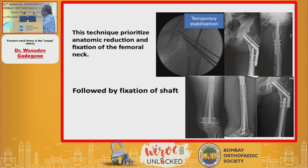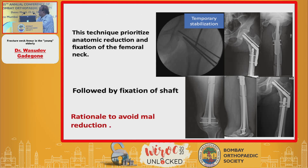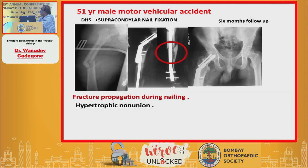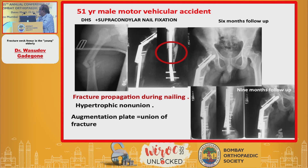This technique prioritizes anatomic reduction and fixation of the femoral neck fracture followed by fixation of the shaft, the rationale being to avoid malreduction of either fracture. Here is an example of ipsilateral fracture with shaft fracture treated by supracondylar nail and DHS with additional screw. One of the fractures went into non-union — hypertrophic shaft fracture — and augmentation plating was done with union achieved.